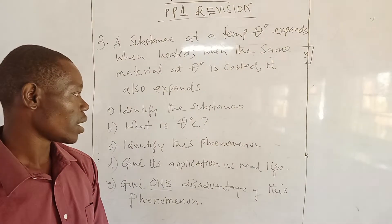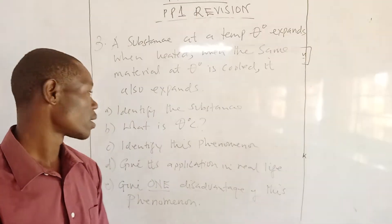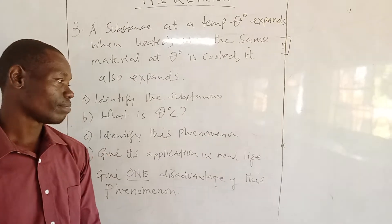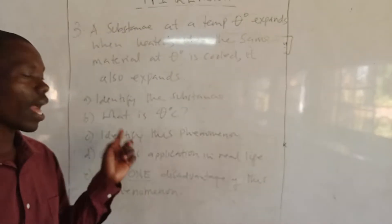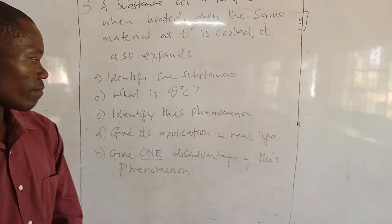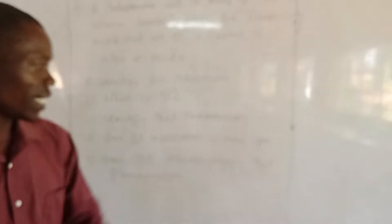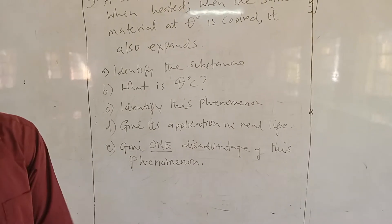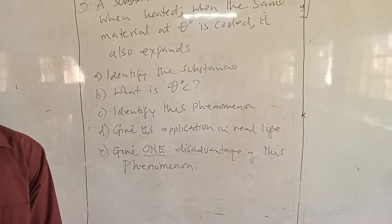Now, question A: Identify the substance. Question B: What is the temperature theta? Question C: Identify the phenomenon. Question D: Give application of the phenomenon in real life. Then question E is asking, give one disadvantage of this phenomenon.